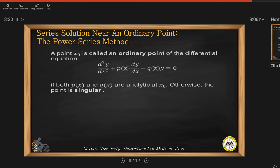Now let's consider a solution near an ordinary point. This is known as the power series method. A point x sub 0 is called an ordinary point of the differential equation if the second order differential equation in the following form, we may call this as the standard equation where the coefficient of the second order is 1, and then the first order, the coefficient is designated by p of x, and then the coefficient of y is q of x. So this is a homogeneous differential equation. Now if both p and q are analytic at x sub 0, then it is an ordinary point. Otherwise, the point is said to be a singular point.